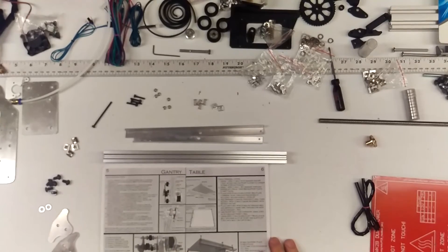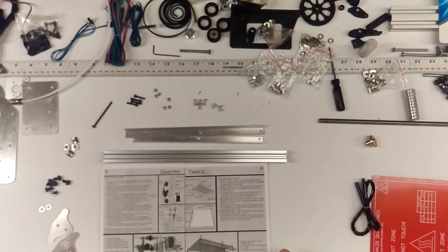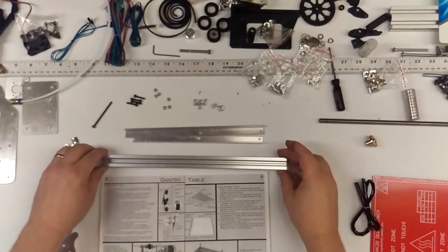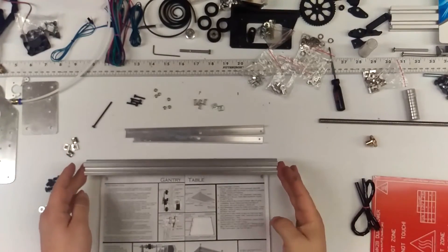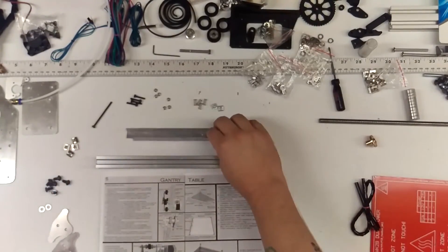Alright guys, we're back. Table assembly. So I got out all my components. We got the longer piece, the 303 millimeter extrusion bed rails.